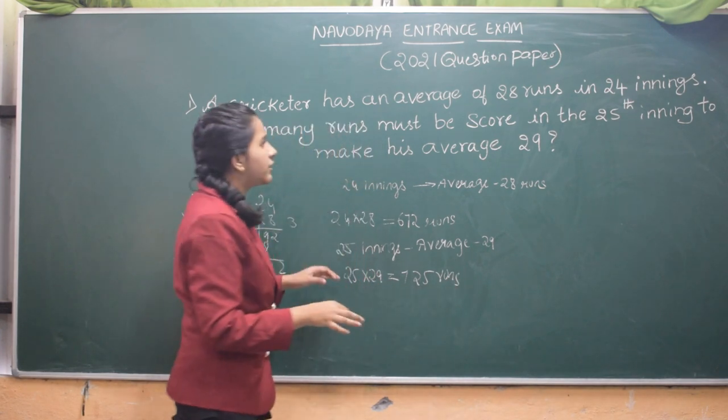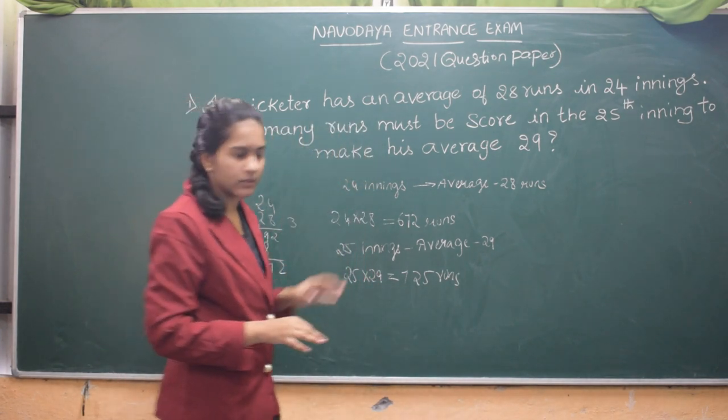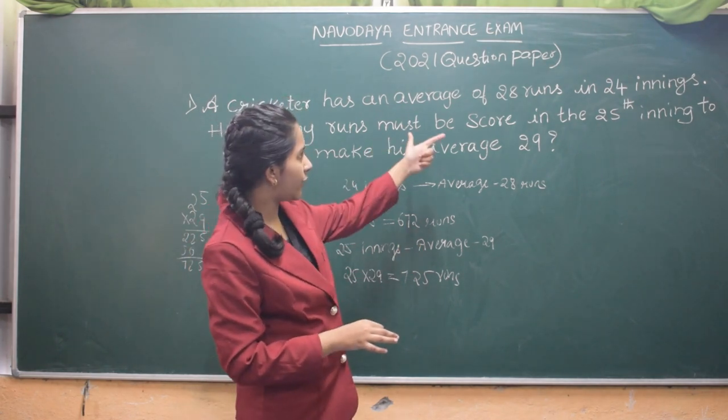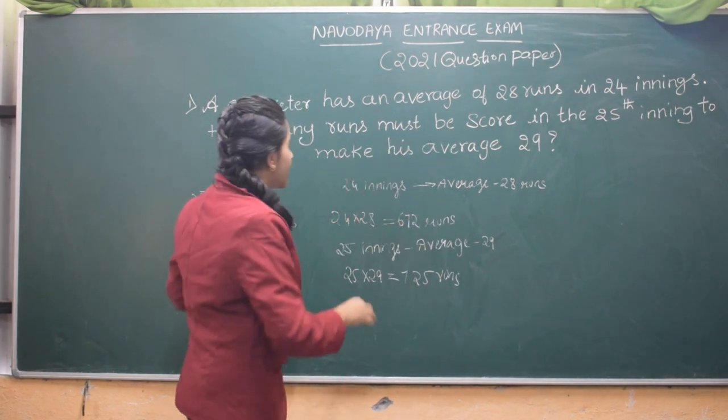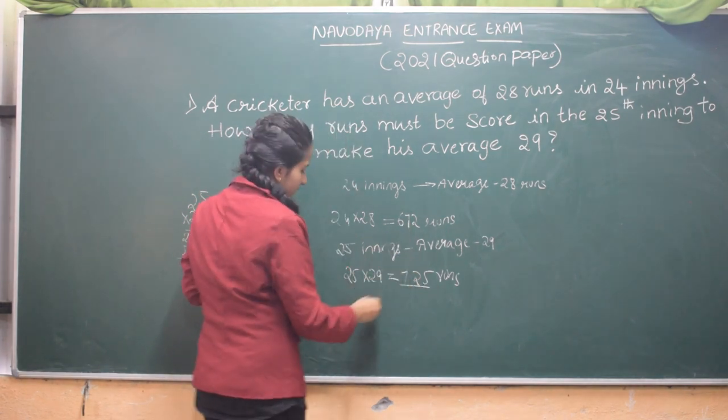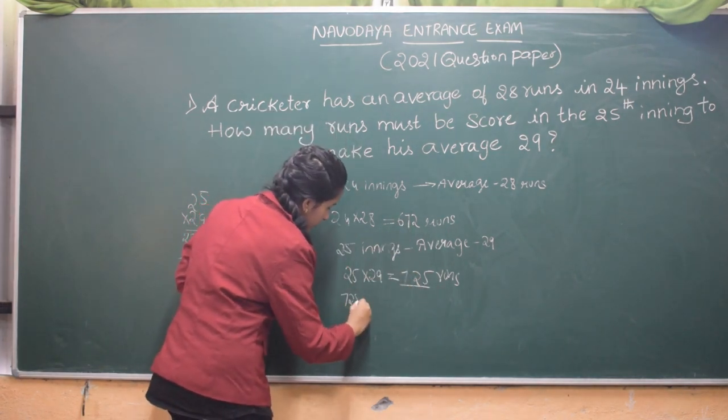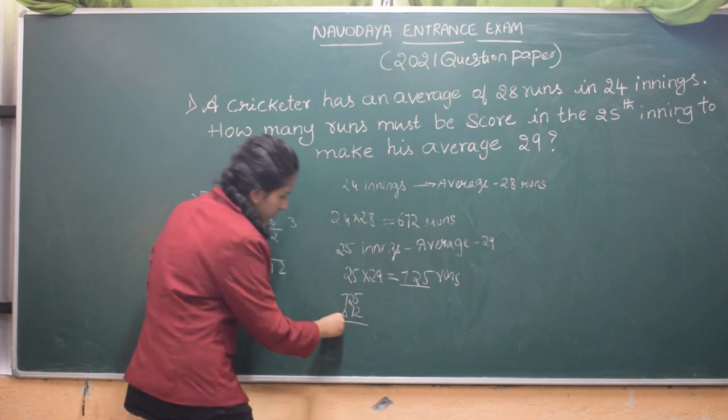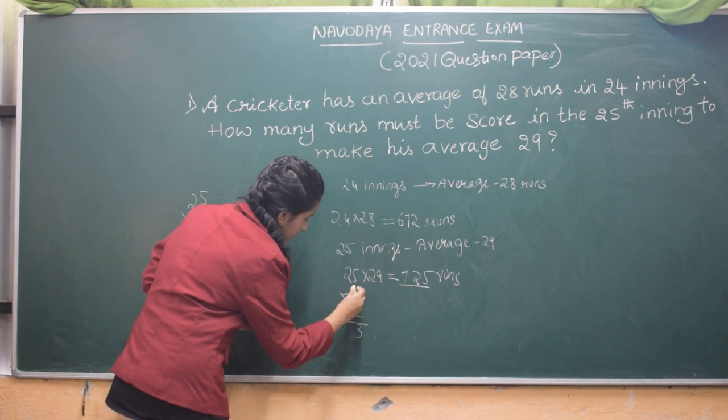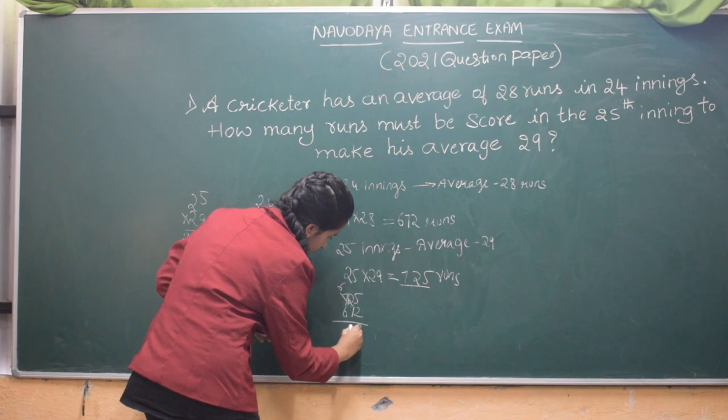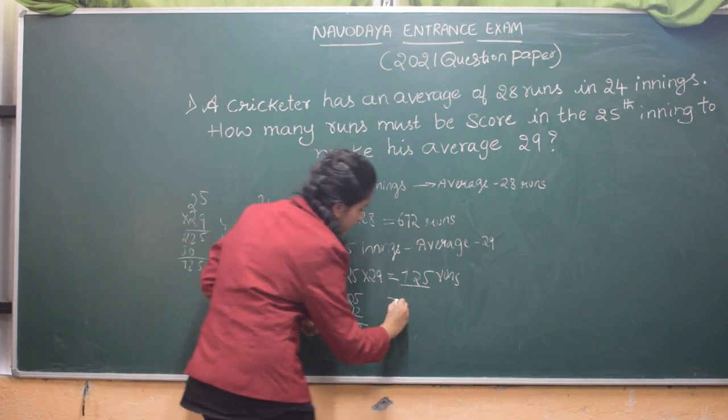Now we need to know only alone in 25th inning how much runs he should make so that the average changes from 28 runs to 29 runs. That means we should subtract 725 from 672. So we will get 53 runs.